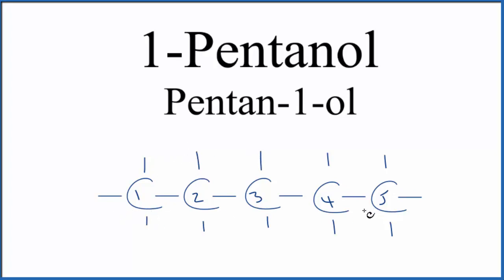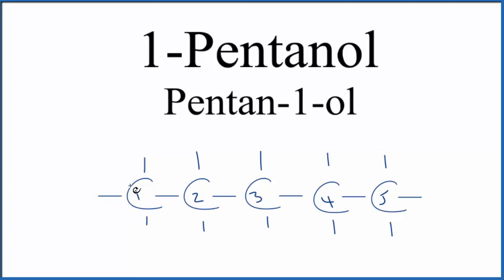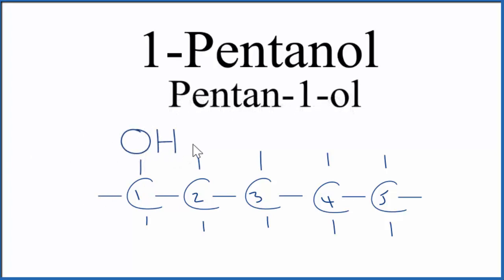Right now we have pentane, but this first carbon here — number one right here — that's where we attach the alcohol. So we're going to put an OH group right here on the first carbon. So this is the structural formula for 1-pentanol.